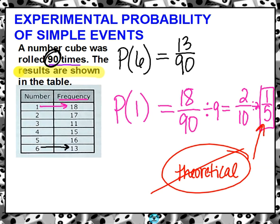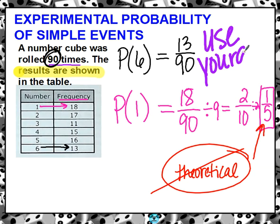So again, the biggest thing that you have to remember is just use your data. So I'm going to write that really big. That's kind of your takeaway. Use your data. Use the data that you are given. So if you do that, that should help you to find the experimental probability.